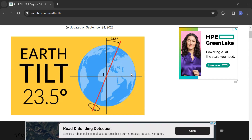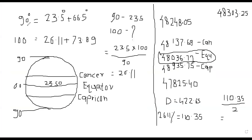We do not use degrees in mathematics; we use the unitary system — ten, hundred, thousand, and so on. For example: 100 paisa is one rupee, 100 miles is around 160 kilometers, 100 kg is one quintal, 1000 kg is one ton. So we need to convert from 90 to 100. Simple calculation using cross multiplication: if the tilt is 23.5 degrees in 90 degrees, how much will it be in 100 degrees? 23.5 multiplied by 100 divided by 90 gives 26.11.